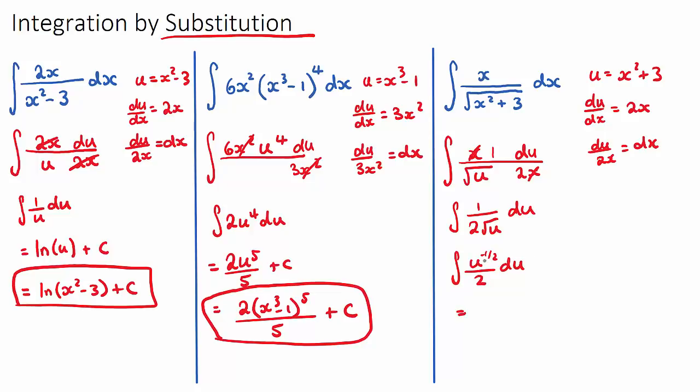If we were to integrate this, we raise the power by 1. So u to the negative a half will become u to the positive a half over, and the new power comes down and multiplies by the 2. A half times 2 is just 1. Plus c. Therefore, our answer will be u to the half, which is the same as the square root of u, which will be the square root of x squared plus 3, plus c.